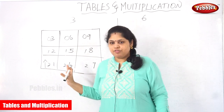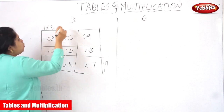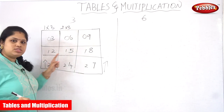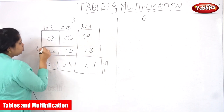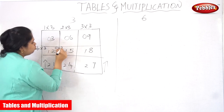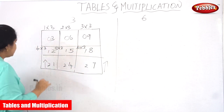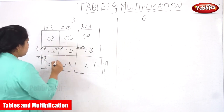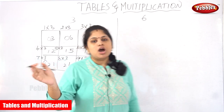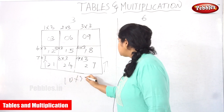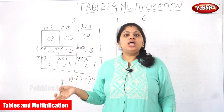Now we have finished, so let me write out the results: 1×3=3, 2×3=6, 3×3=9, 4×3=12, 5×3=15, 6×3=18, 7×3=21, 8×3=24, 9×3=27, and of course 10×3=30. This is the simplest grid method to learn the three times table.